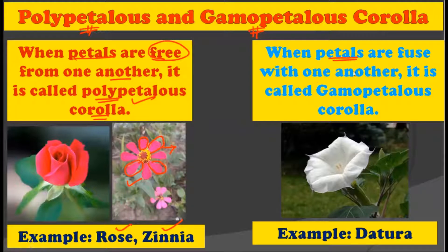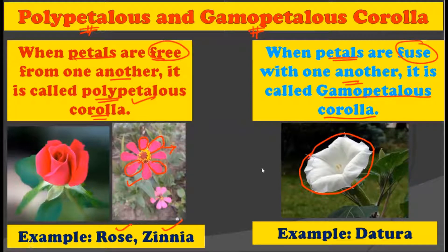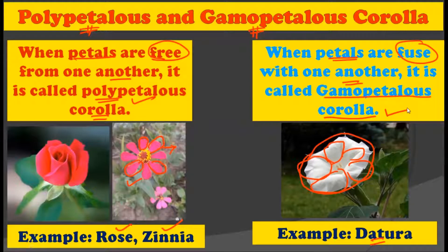When petals fuse with one another, such a type of corolla is called gamopetalous corolla. In the example of Datura, the individual petals are fused with each other, forming an umbrella-like structure. So these fused corollas are called gamopetalous. In summary, polypetalous corolla has free petals, while gamopetalous corolla has fused petals.